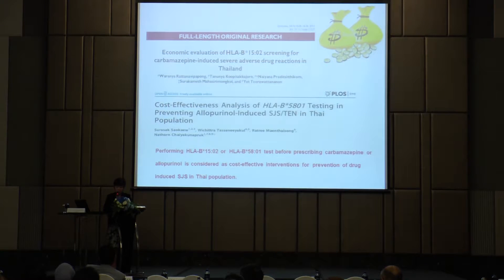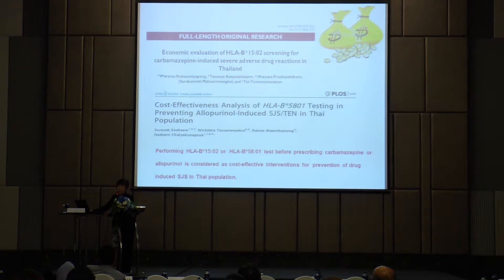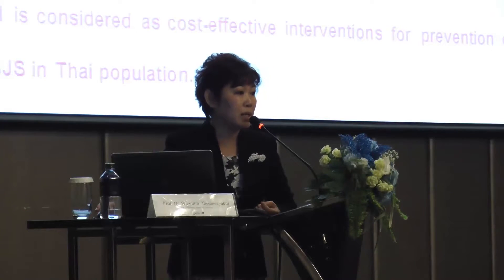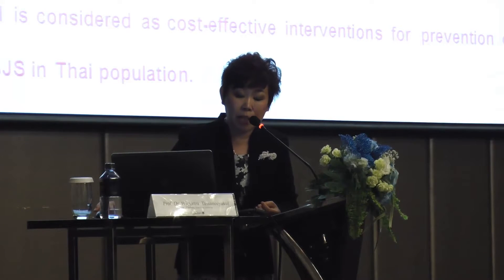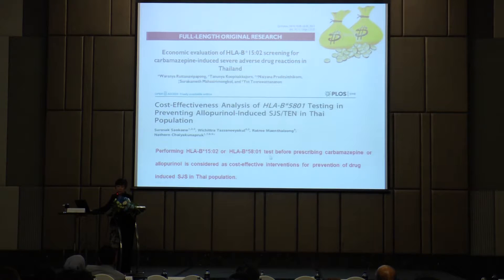Our group has also been collaborating with other research groups. After finding that these two alleles may be valid markers for prediction of SJS and TEN in our Thai population, we tried to convince healthcare policymakers that screening of these alleles may be beneficial for patients. The way to convince them was to show the cost-effectiveness of HLA testing. These two publications clearly show that performing HLA-B*1502 or 5801 testing before prescribing carbamazepine or allopurinol is considered a cost-effective intervention for prevention of drug-induced SJS and TEN in the Thai population.